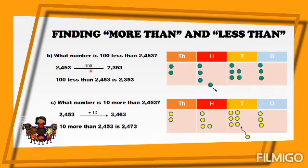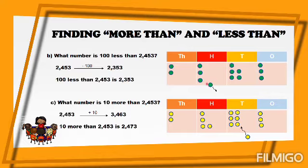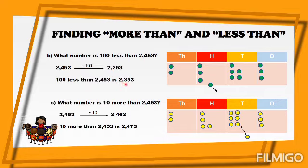Using the place value chart, we have ones, tens, hundreds, and thousands. We have three ones, five tens, four hundreds, and two thousands. We remove one dot from the hundreds place to represent minus one hundred. Since we are removing one from the hundreds place, four hundreds minus one hundred equals three hundred. So the answer is two thousand three hundred fifty-three.